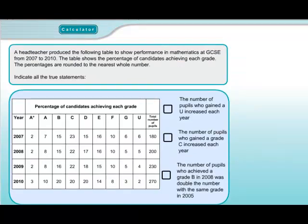Question 15. A head teacher produced the following table to show performance in maths at GCSE from 2007 to 2010. The table shows the percentage of candidates achieving each of the possible grades. Percentages have been rounded to the nearest whole number, and you have to indicate all the true statements. In this question there are actually three sub-questions and you have to get all of them correct in order to score the one mark available.